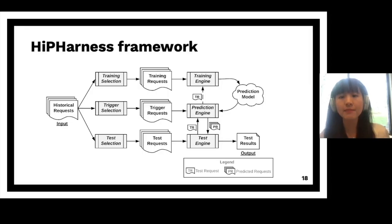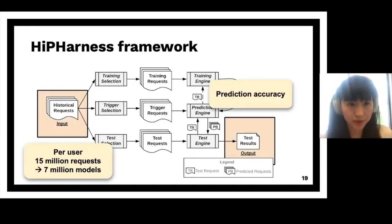To ease our empirical study, we first developed this hip-hardness framework. It is a customizable framework that allows you to study the impact of different aspects of the prediction models. You can turn the knobs with different parameters to study their impact. One example of such a knob is how much historical request is used to build the prediction model. The input is the historical request of a particular user. In total, we collected over 15 million history requests, and we built over 7 million prediction models for each individual user. For each user, there could be multiple models because you can build the model using different prediction algorithms. You can also slice and dice how much training data is used to build the model. The output of hip-hardness is the prediction model's accuracy.